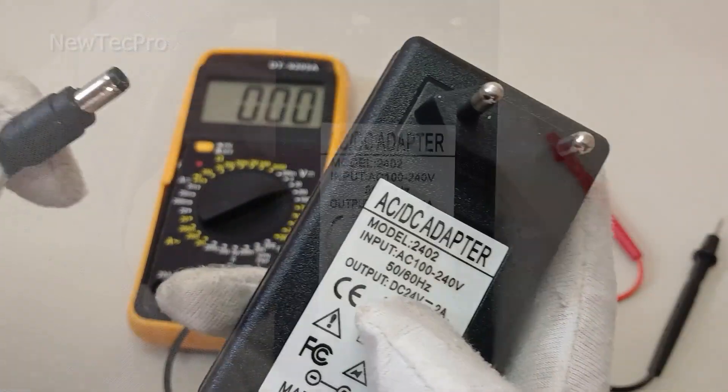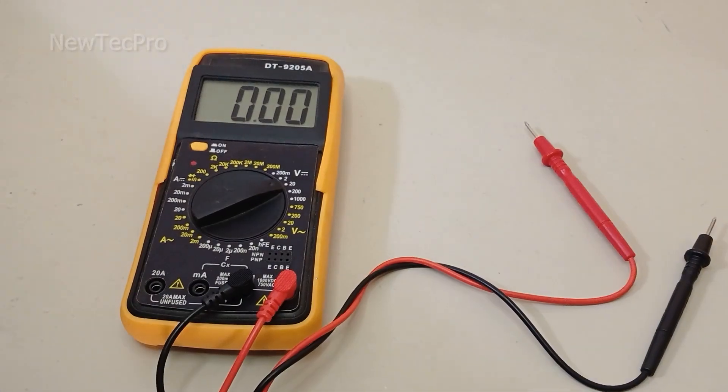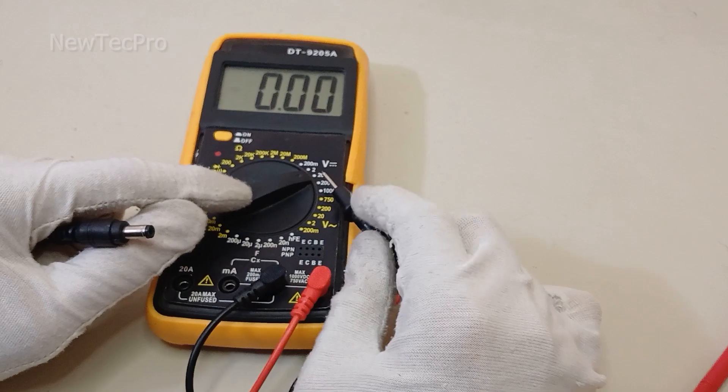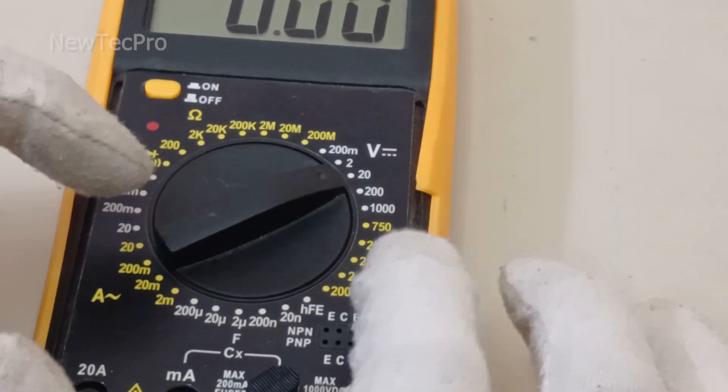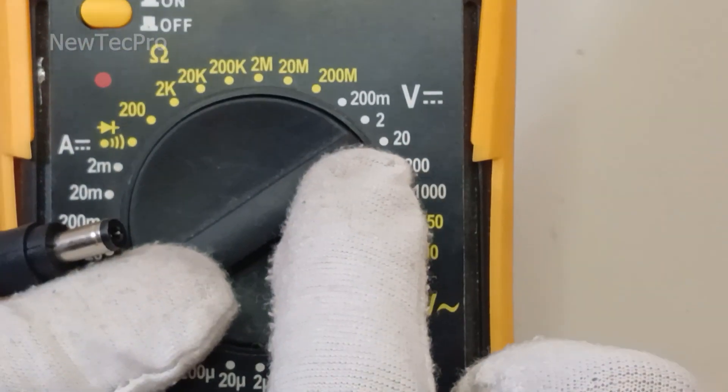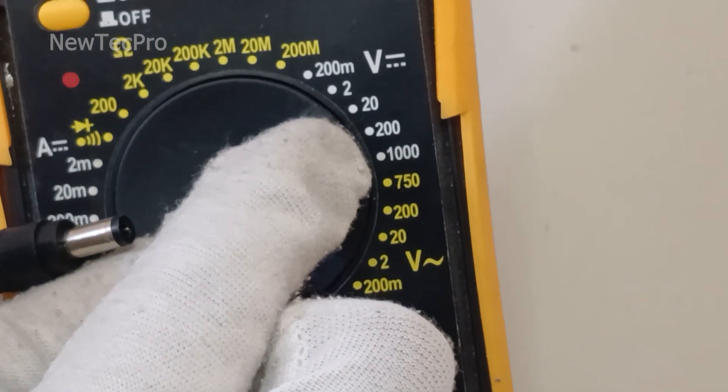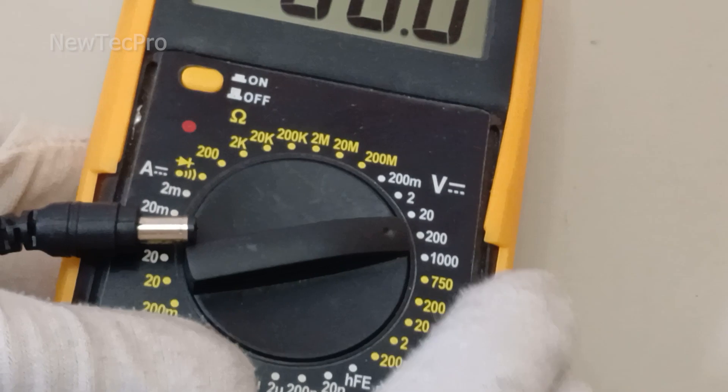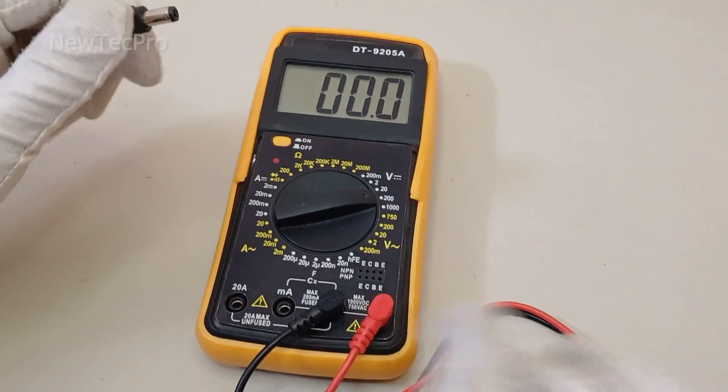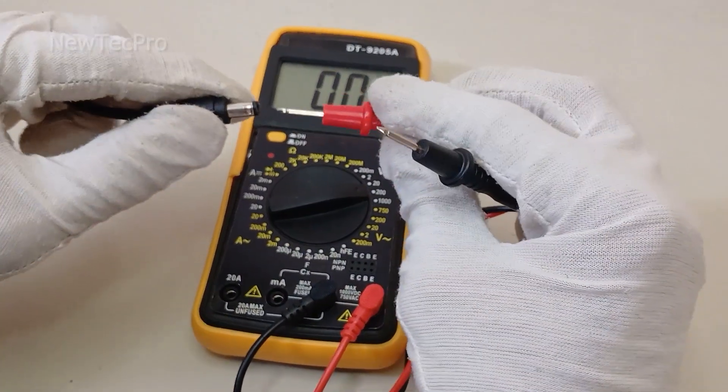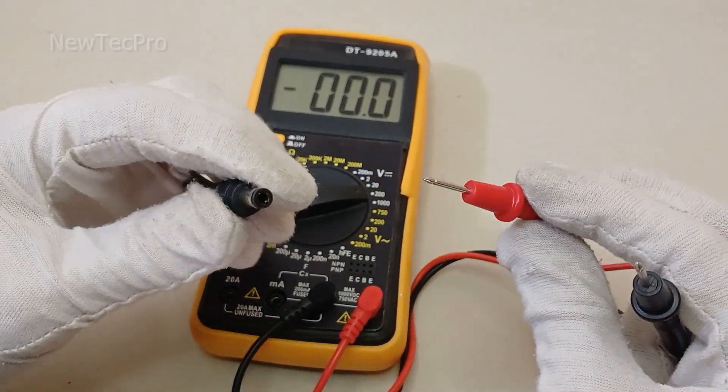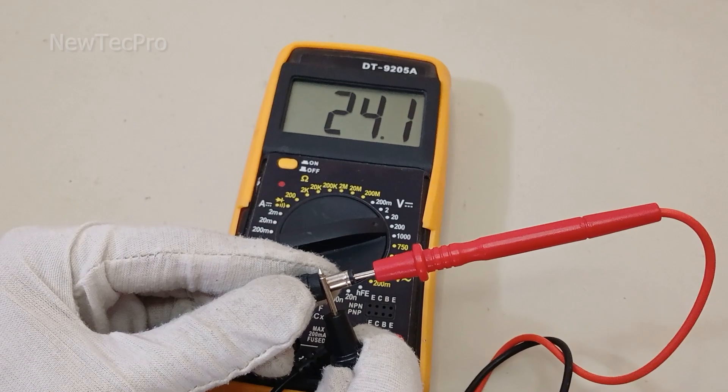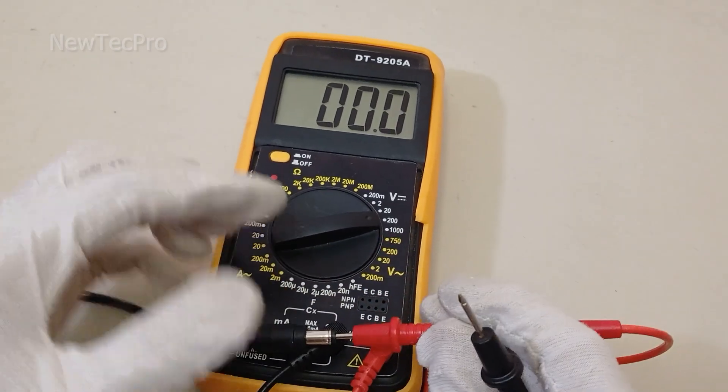For another example, I'll try measuring this AC/DC adapter, 24 voltage. As you can see, 24. For measuring 24, you need to set the voltage to 200 volt on the multimeter, and try measuring positive here with red and negative here. You can see 24 volt.